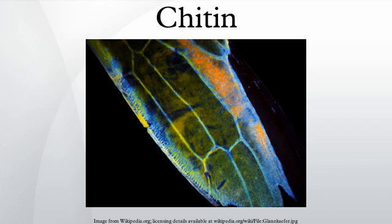Chitin is a long-chain polymer of N-acetyl glucosamine, a derivative of glucose, and is found in many places throughout the natural world. It is the main component of the cell walls of fungi, the exoskeletons of arthropods such as crustaceans and insects, the radula of molluscs, and the beaks and internal shells of cephalopods, including squid and octopuses.